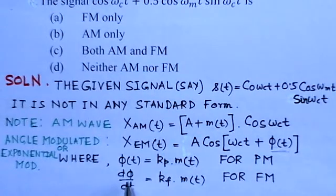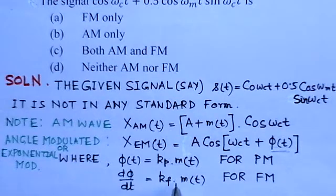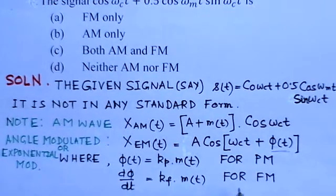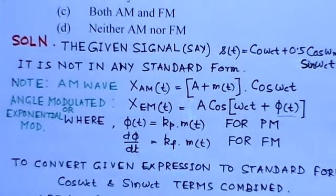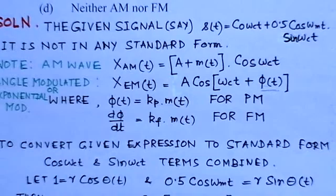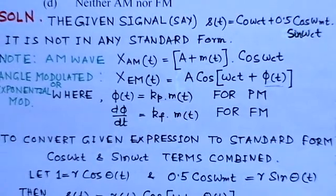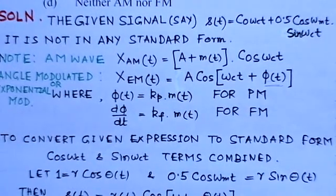For frequency modulation, dφ/dt is given by k_f·m(t). This is for frequency modulation. Now we know the standard equations for angle modulation and amplitude modulation.